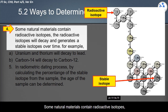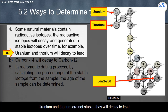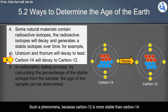Some natural materials contain radioactive isotopes. Radioactive isotopes are not stable — they will decay and generate stable isotopes over time. For example, uranium and thorium are not stable and will decay to lead. Carbon-14 will decay to carbon-12, where two neutrons leave from carbon-14 to become carbon-12, because carbon-12 is more stable than carbon-14.